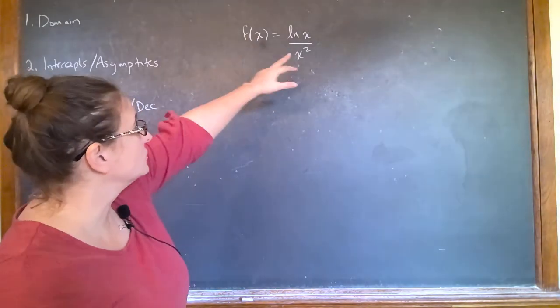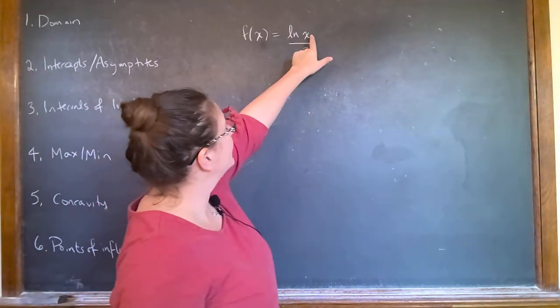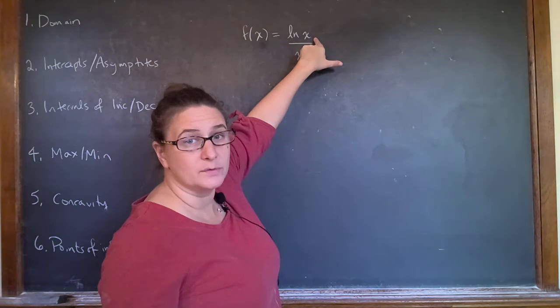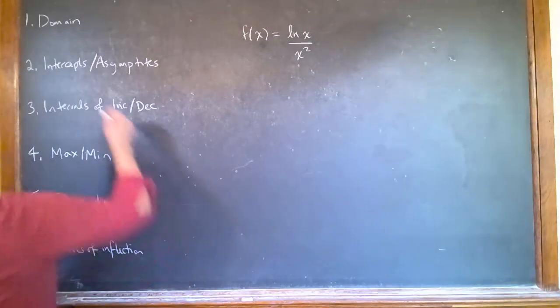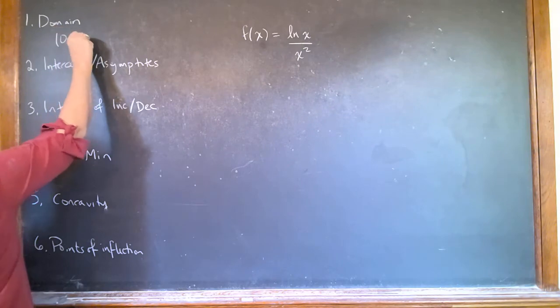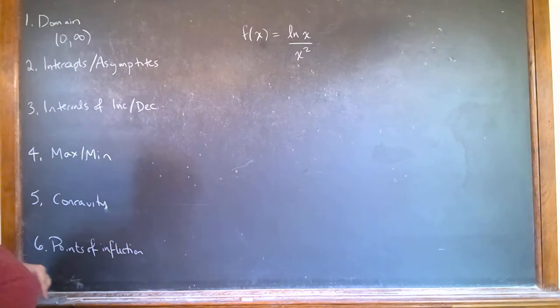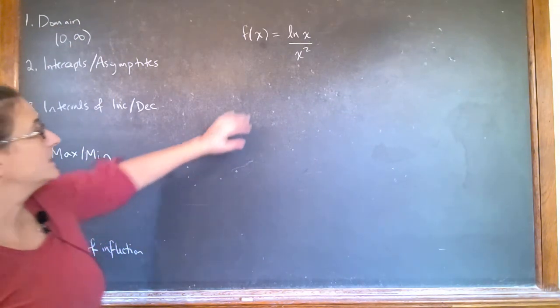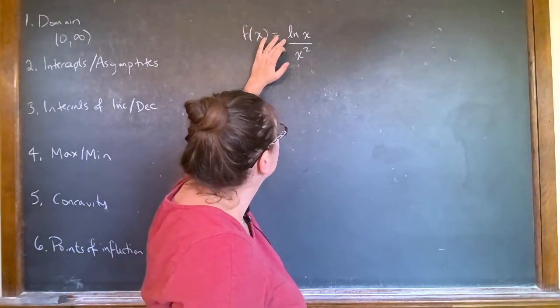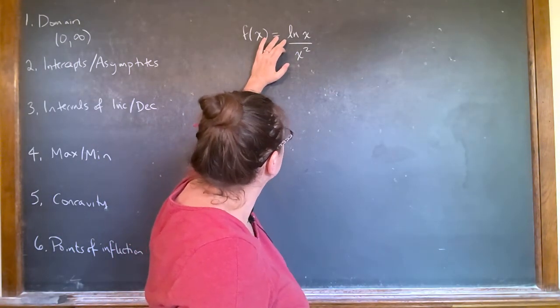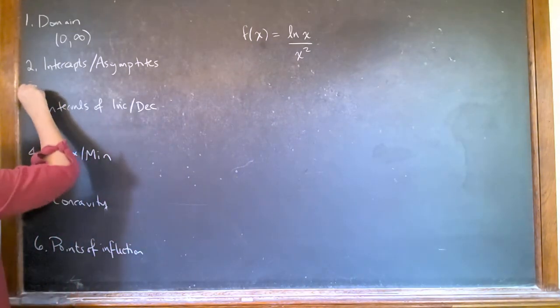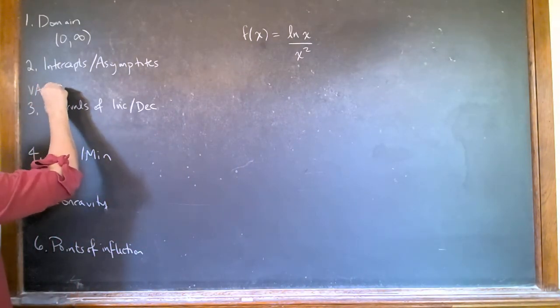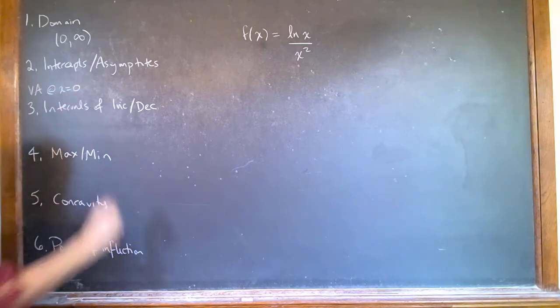So you know that your domain, you can't have x being negative or zero, right? Because that's the domain of natural log. So immediately you know that this is that. And immediately you also know that because natural log has an asymptote at zero, you're going to have a vertical asymptote at zero.